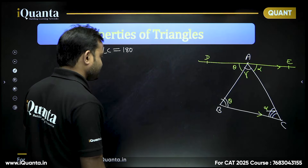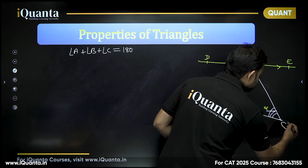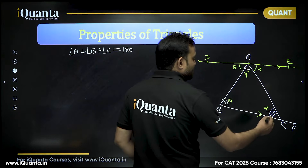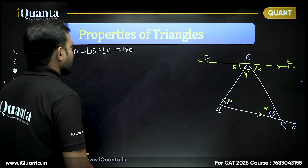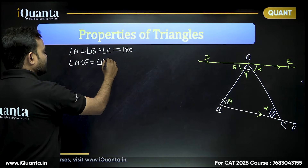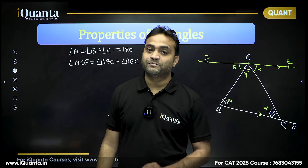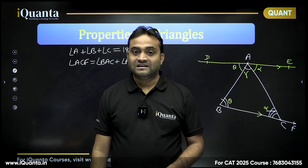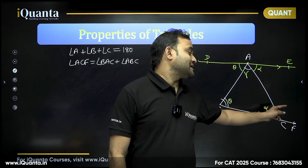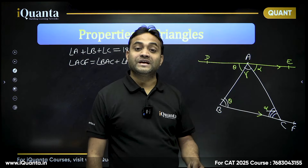There is another property known as the exterior angle property. If point F is on the extension of BC, then angle ACF equals angle BAC plus angle ABC. This means the exterior angle of a triangle equals the sum of the two opposite interior angles — the two angles not adjacent to the exterior angle.